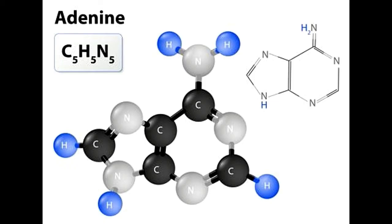Adenine is a purine nucleobase with the molecular formula C5H5N5. Its IUPAC name is 9H-purine-6-amine, but is also known as 6-aminopurine. It consists of a heterocyclic structure with an imidazole ring attached to a pyrimidine ring. It exhibits the presence of an additional amine group at the sixth carbon. It acts as a core molecule in a number of coenzymes. It conjugates and bonds with a pentose sugar molecule to form a nucleoside, adenosine.